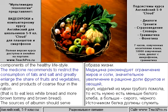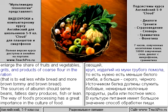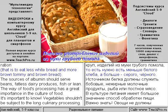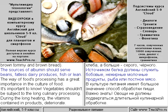Medicine recommends restricting the consumption of fats and salt, and greatly enlarging the share of fruits and vegetables, grits, and coarse flour products in the ration — that is, to eat less white bread and more brown bread.